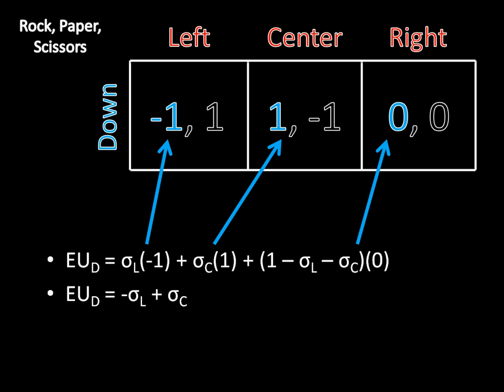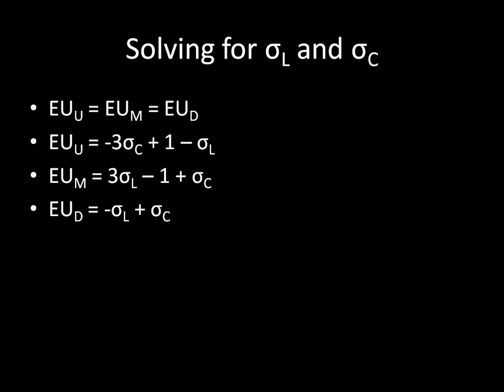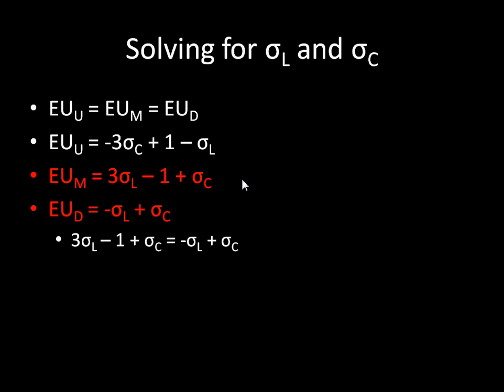We can now solve for sigma-left and sigma-center. Player one has to be indifferent among all three strategies, so EU(up) equals EU(middle) equals EU(down). Let's start by setting EU(middle) equal to EU(down). If we do a little bit of algebra, the sigma-center terms cancel out very quickly and we're left with four times sigma-left equals one, so sigma-left equals one-fourth. In equilibrium, player two is going to play left, or rock, with probability one-fourth.